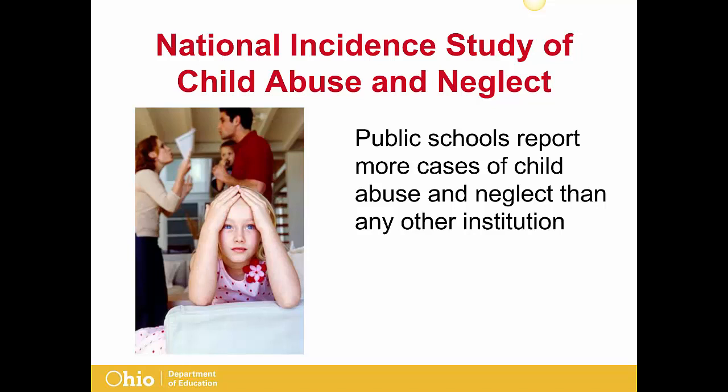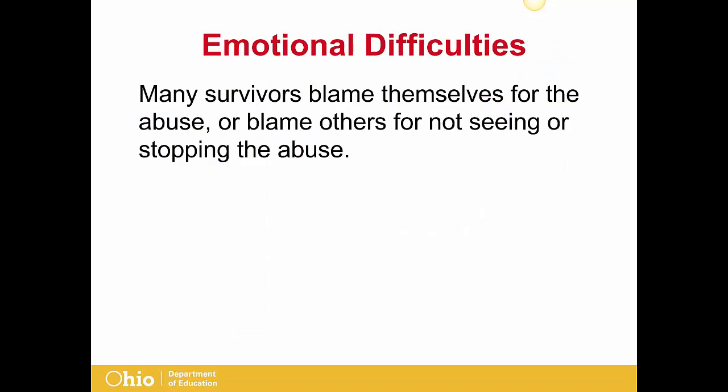The fourth national incidence study of child abuse and neglect showed that public schools report more cases of child abuse and neglect than any other institution. These findings reflect the central role school professionals play in identifying children who are abused and neglected. Educators play a unique role because they have access to children and expertise in child development. Providing educators with the tools to identify, reach out, and refer in cases of abuse and neglect can help prevent or minimize the damaging effects of these violent behaviors. Additionally, survivors of child abuse often go on to develop other emotional difficulties, and many tend to blame themselves for the abuse or blame others for not seeing or stopping it.